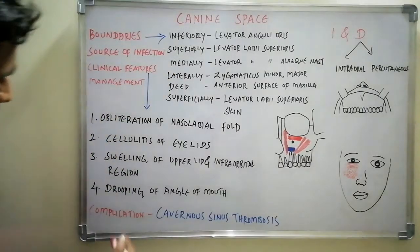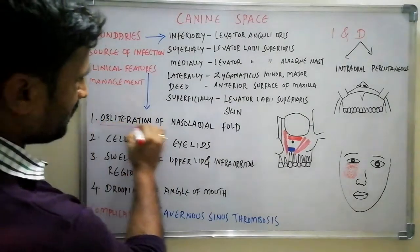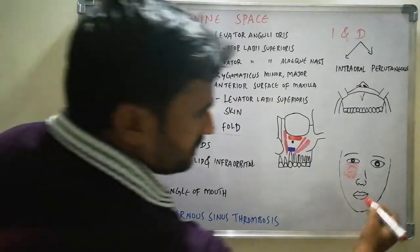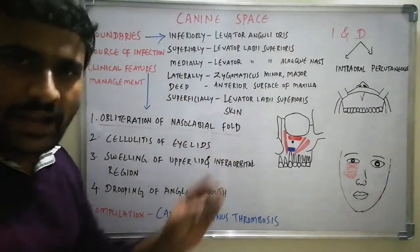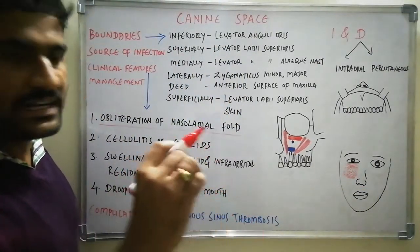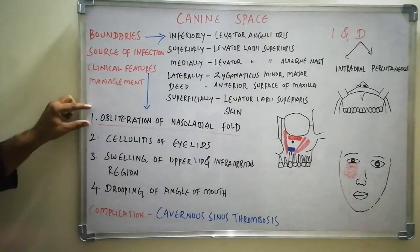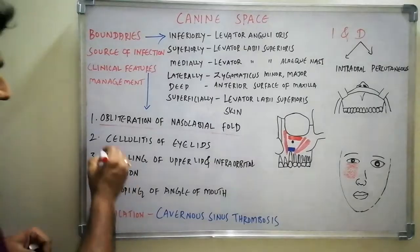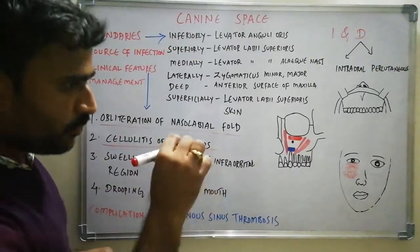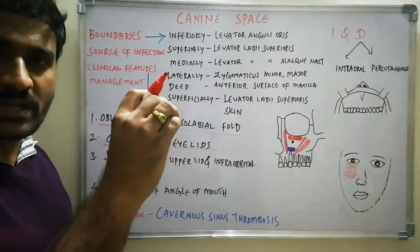There are four main clinical features to write in the exam. The foremost important is obliteration of the nasolabial fold. The nasolabial fold is the fold on the lateral side of the nose, and that fold is obliterated. You can see swelling in the upper lip and cheek region, especially in the infraorbital region. The second important feature is cellulitis of the eyelids, especially involving the lower eyelid.